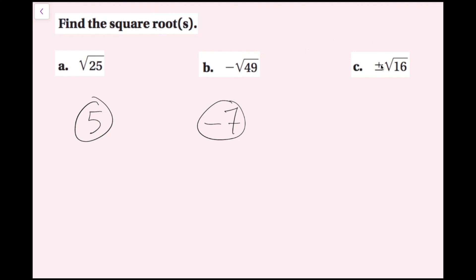For part c, it wants plus or minus the square root of 16, so it wants both square roots. I need to figure out what number squared equals 16 — 4 times 4 is 16. I want both the positive and negative square root, so I can write that as plus or minus 4. This represents two numbers: positive 4 and negative 4. Both of these are the square roots for part c.